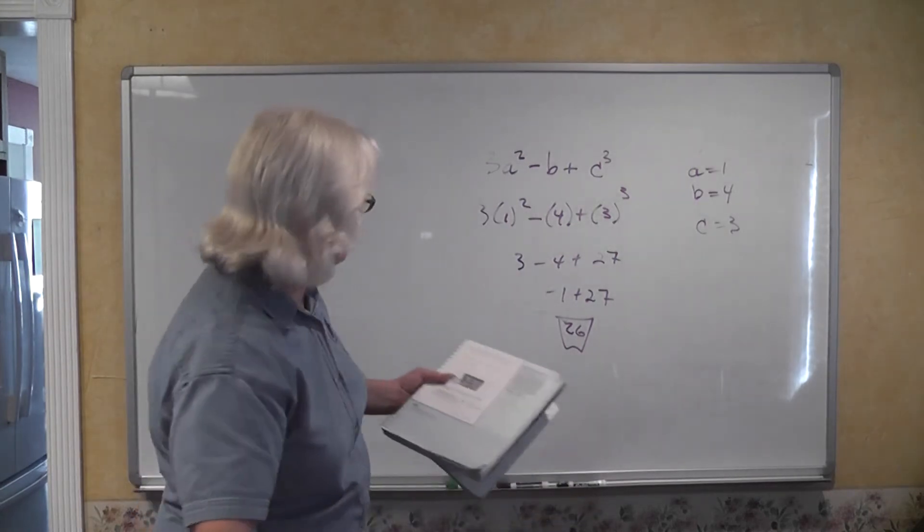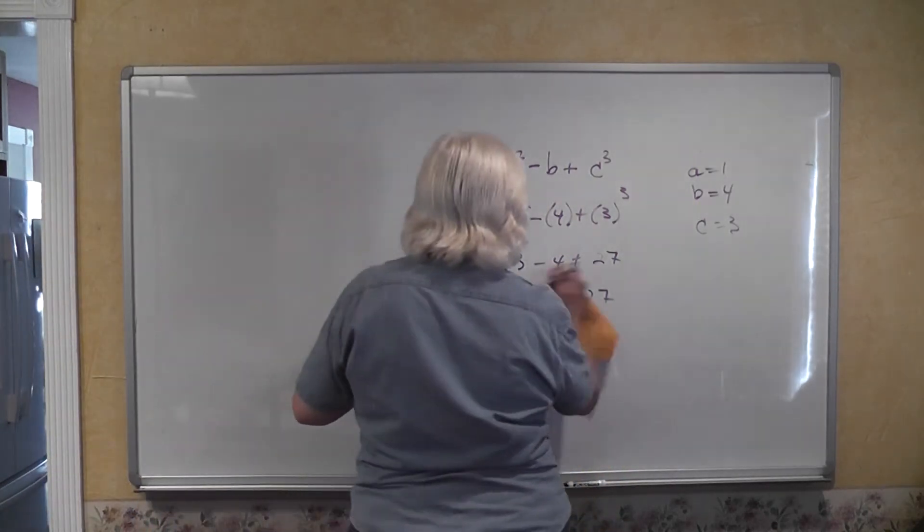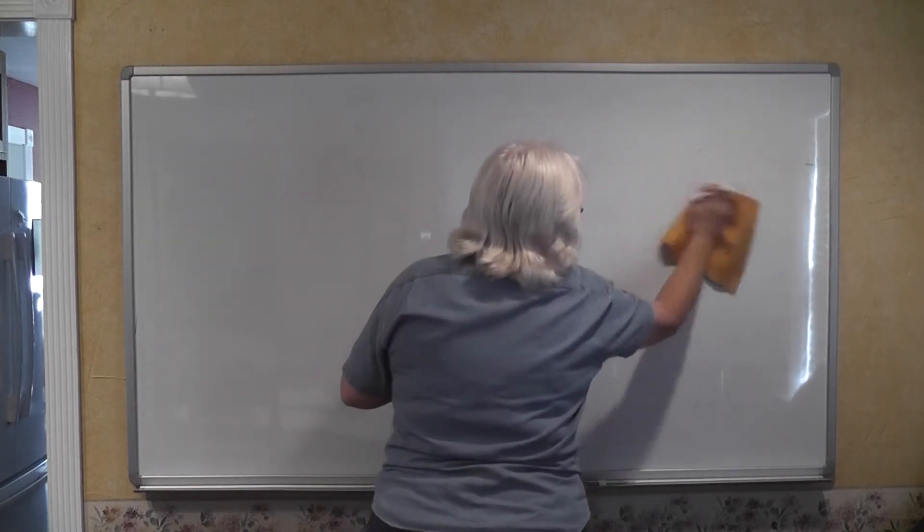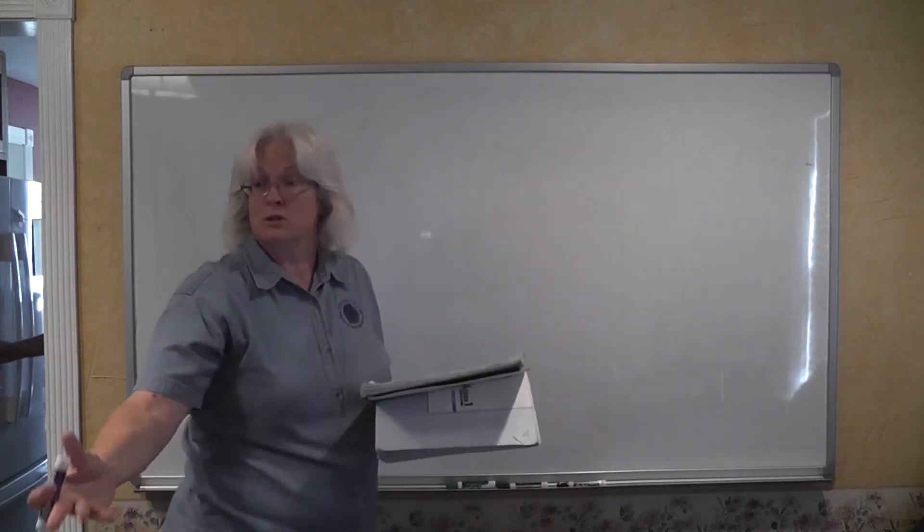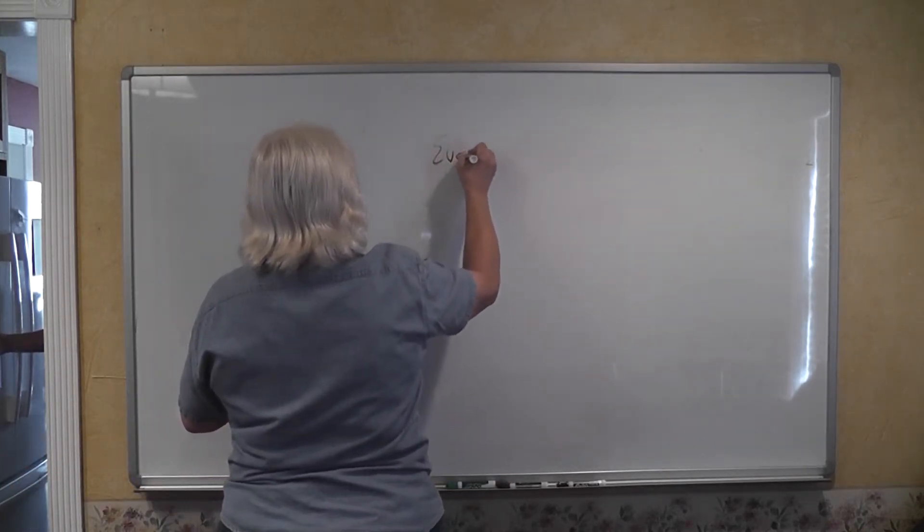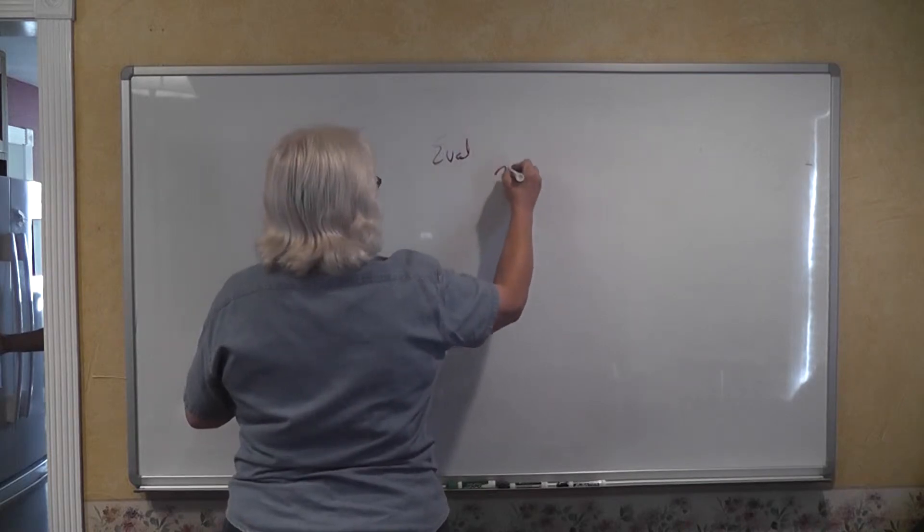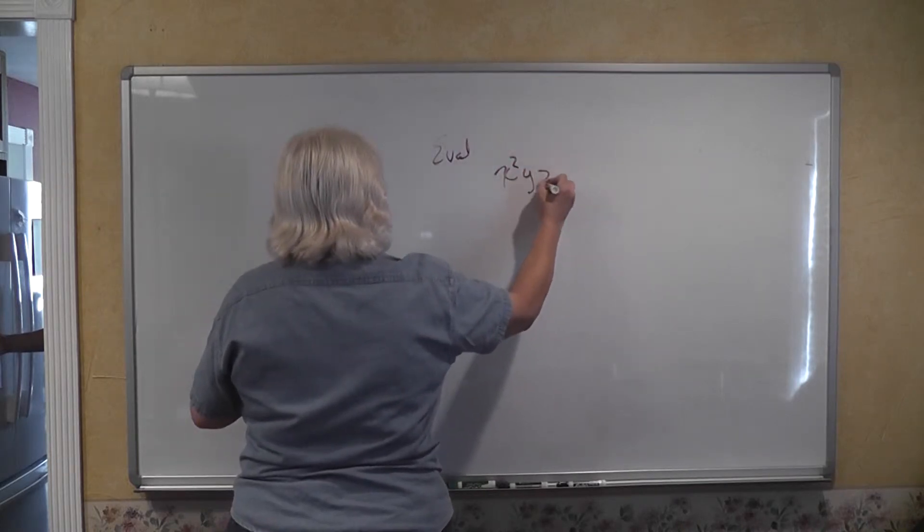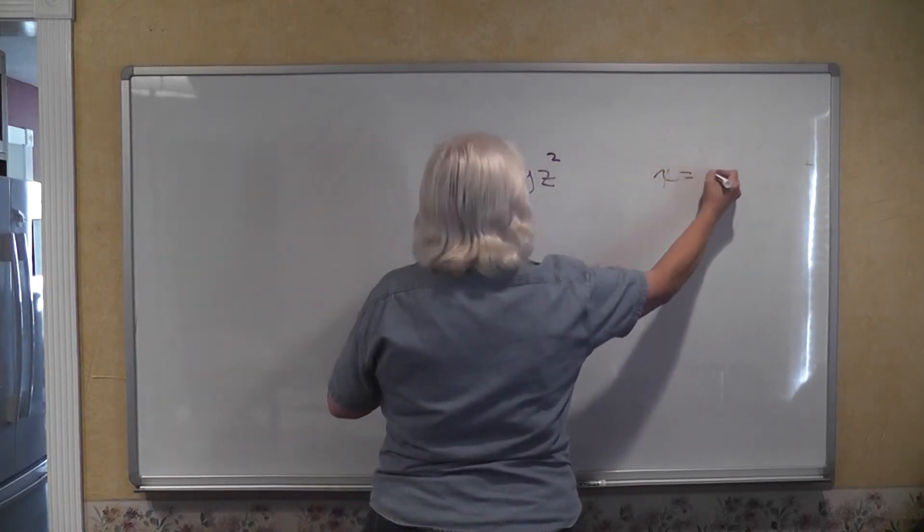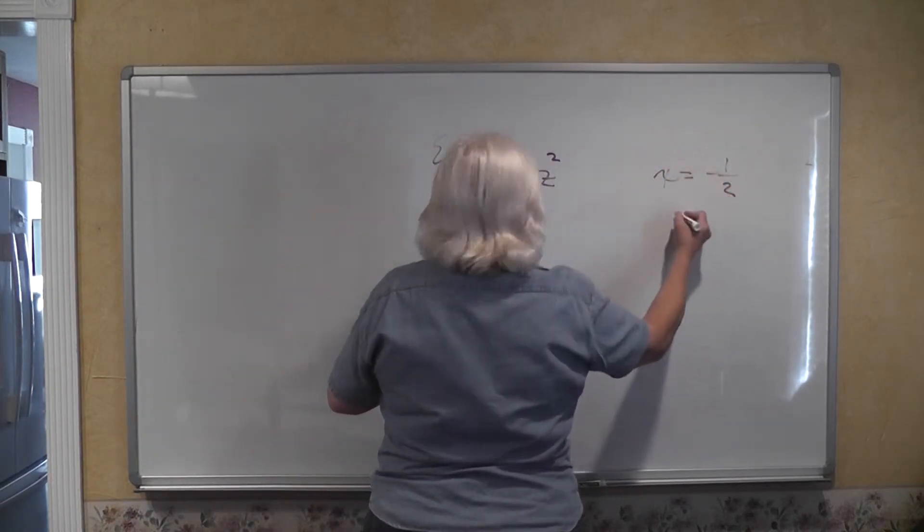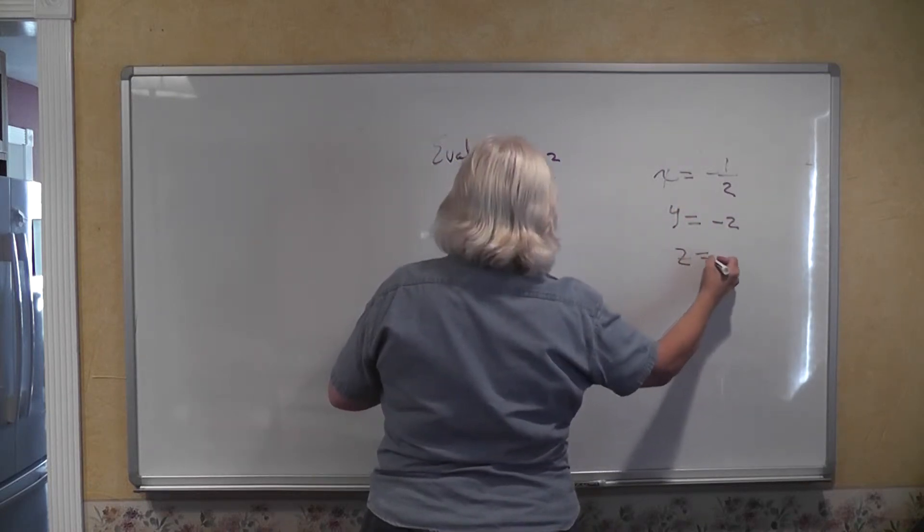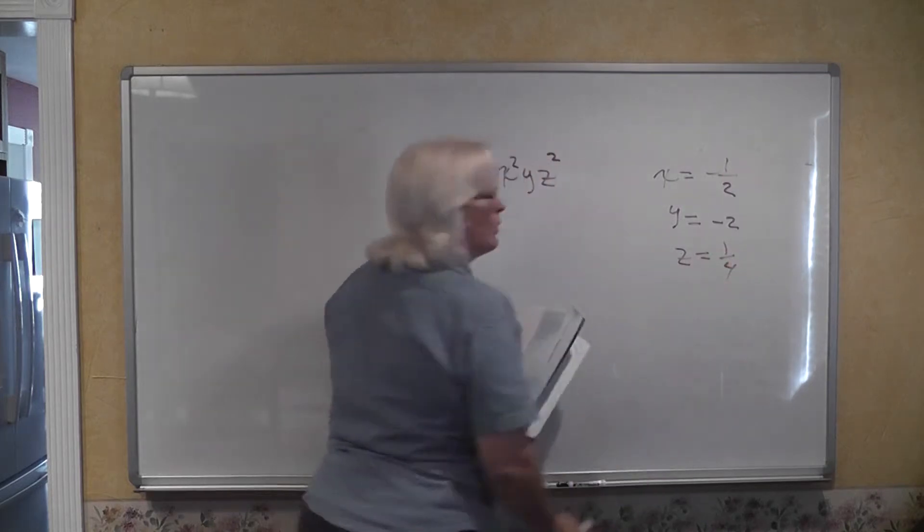Alright, we now have example 4, which has some fractions in here. You use fractions just the same way that you substitute anything else. They're asking us to evaluate the expression x squared times y times z squared. And they're giving us values where x is equal to a negative 1 half, y has a value of a negative 2, and z is equal to 1 fourth.